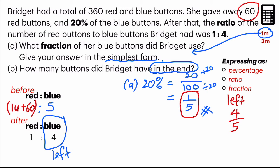But no problem, because I know the total is 360. So I will take 360, subtract away the 60 red buttons that were given away. I get 300.